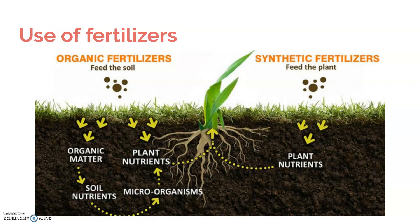Organic fertilizers — like compost, manure, or green manure, which is essentially the use of plants to feed the soil — treat the plants as part of the soil. So as opposed to focusing on the plant directly, you focus on the soil, and if you're supporting the soil, it naturally is going to support the plant.